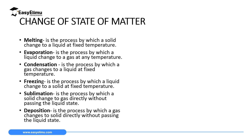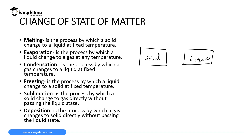How are the three states of matter related, and is it possible to change one state to another in the same substance? For example, ice in a solid state can change to water in a liquid state, or to steam in a gaseous state. If we consider the three states — solid, liquid, and gas — you can move from solid to liquid in process A, which is called melting. Melting is the process by which a solid changes to liquid at a fixed temperature.